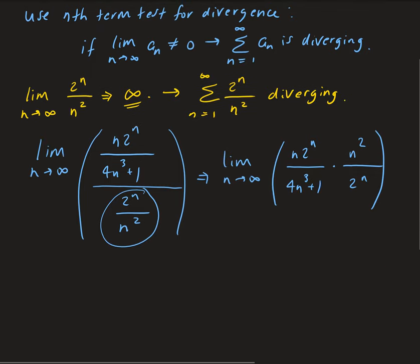From here now, we're going to get, so we can cancel out 2 to the n. And that's going to leave us with n cubed all over 4n cubed plus 1.